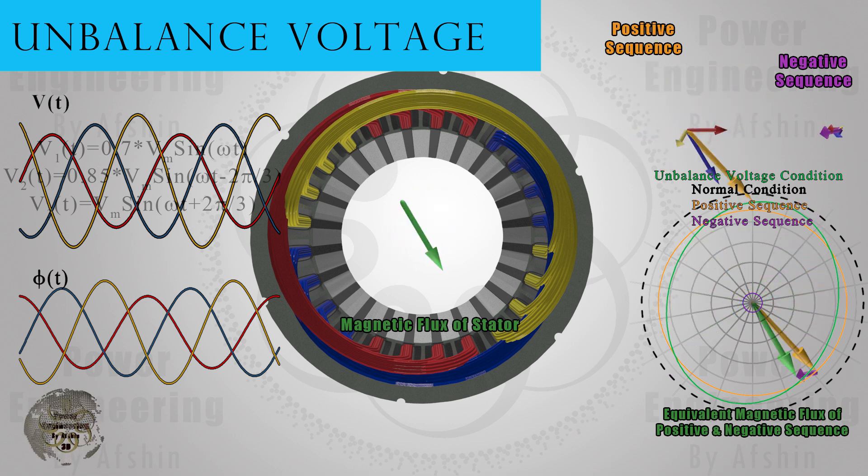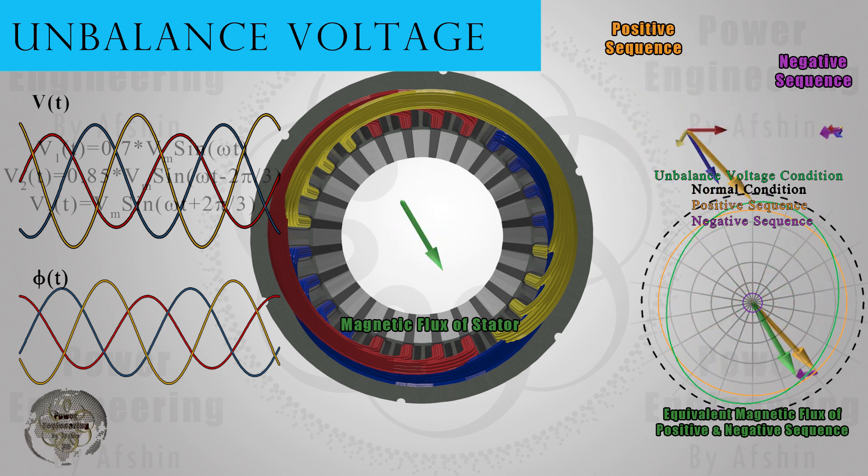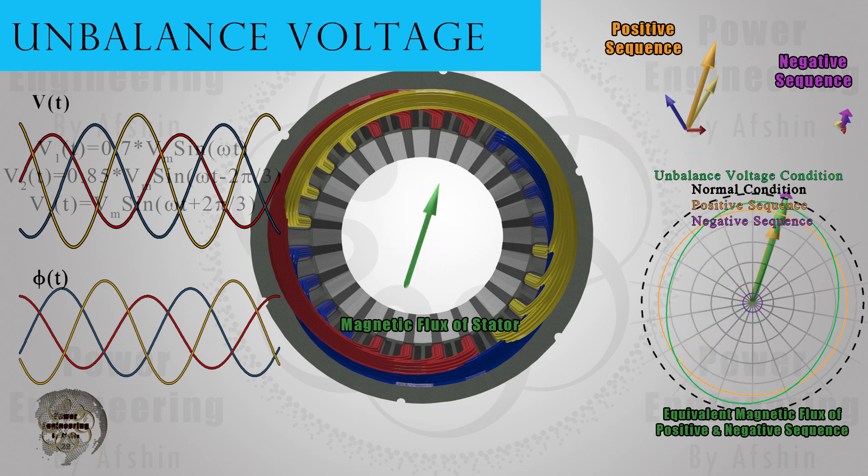Additionally, the negative sequence leads to more heat generation and losses. On the left side, you can observe voltage and magnetic flux curves, showing the magnitude of the magnetic field at 360 degrees. Also, on the right side, you can observe the size and rotation direction of the positive and negative sequences and their sum. The sum of the positive and negative sequences equals the magnetic flux inside the stator.